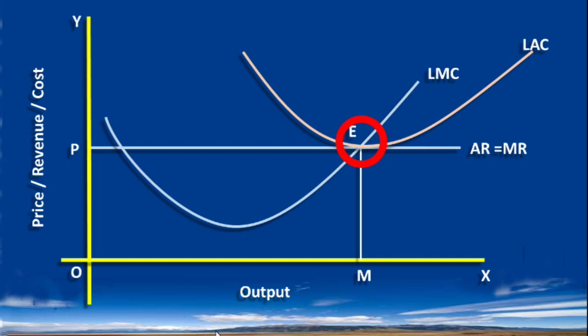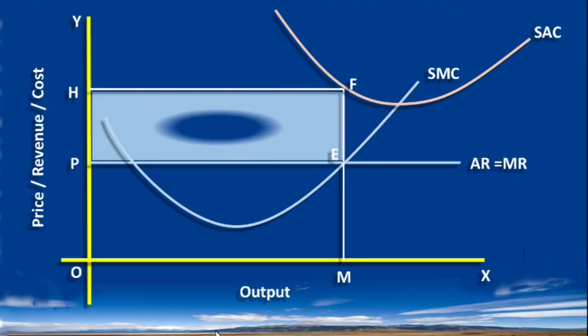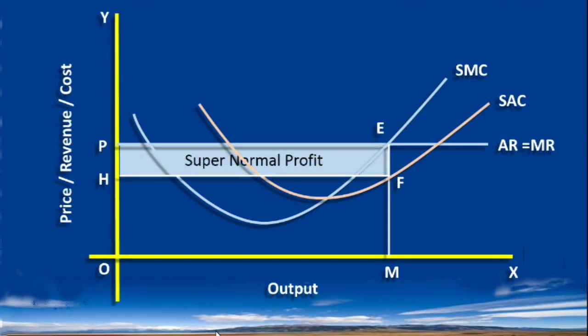This phenomenon could be viewed from two angles. First, in the short run all the firms are in equilibrium, but they suffer loss — what will happen in the long run? Second, in the short run all the firms are in equilibrium, but they enjoy supernormal profit — what will happen in the long run?